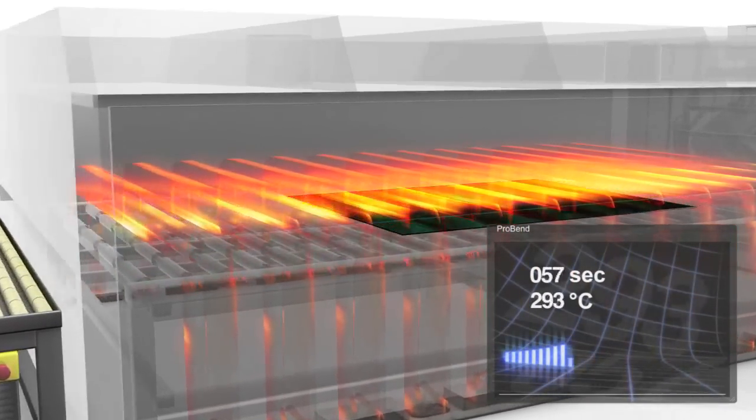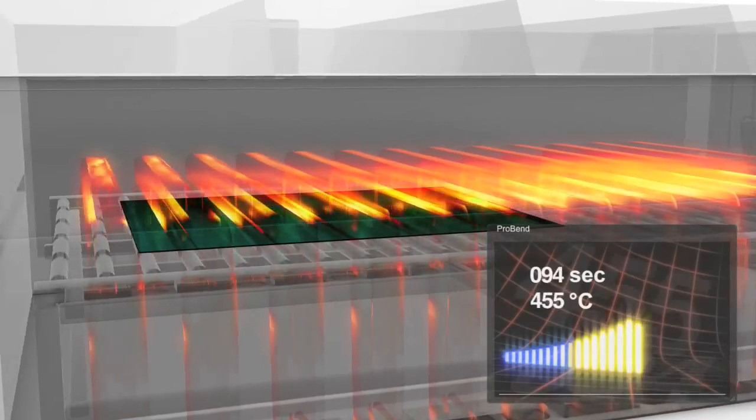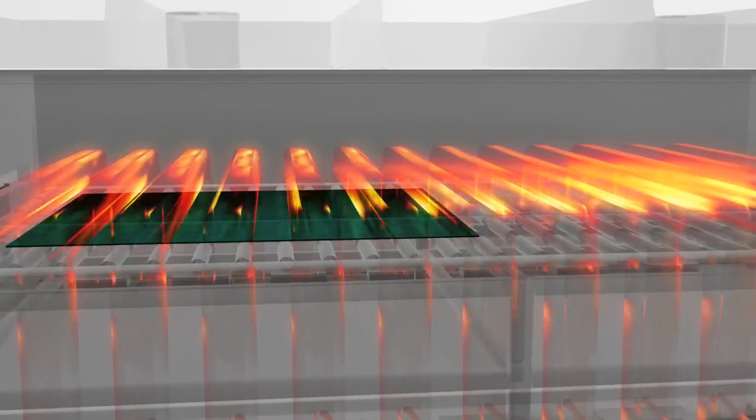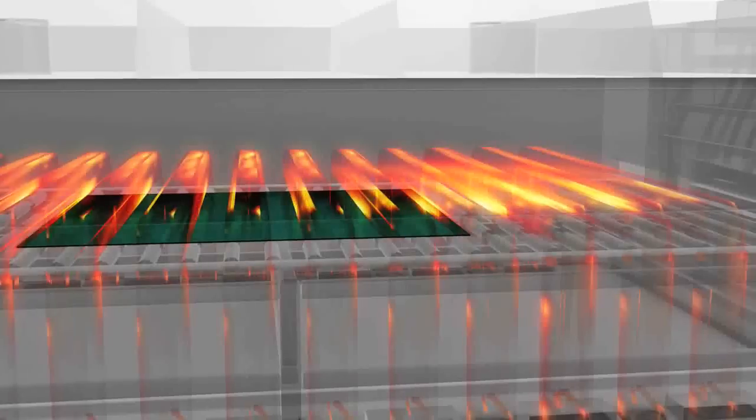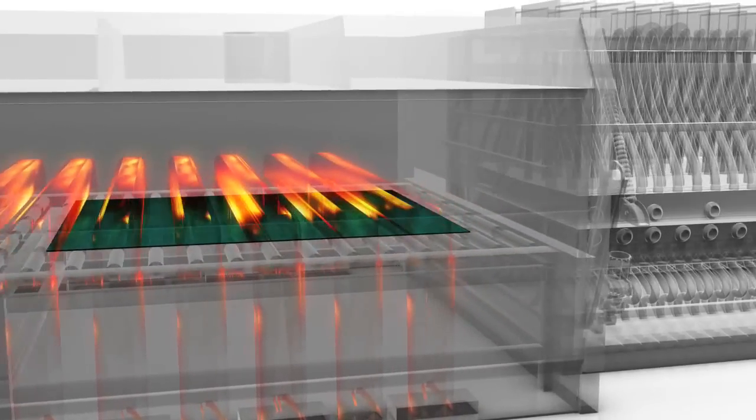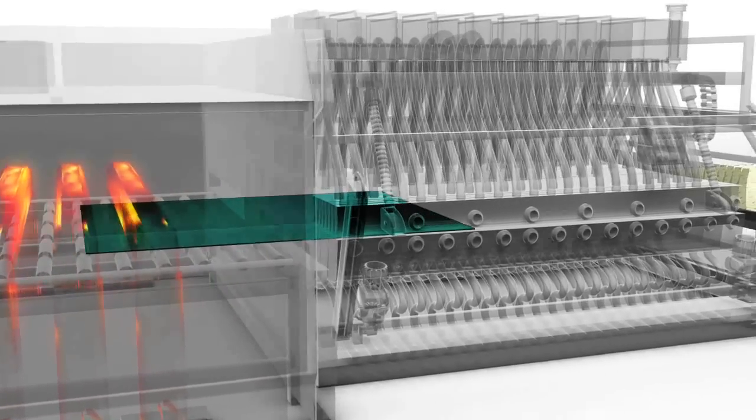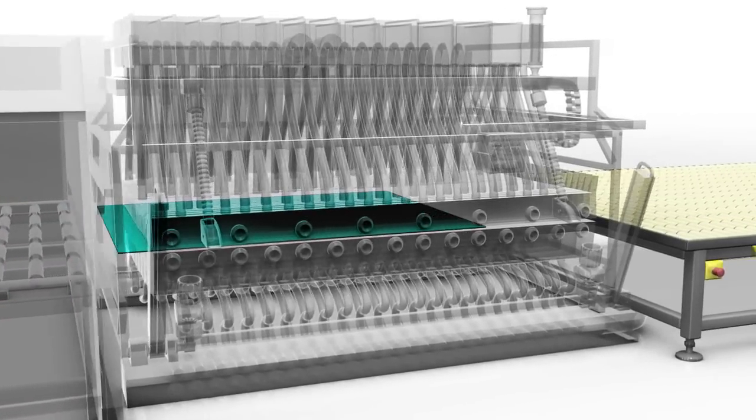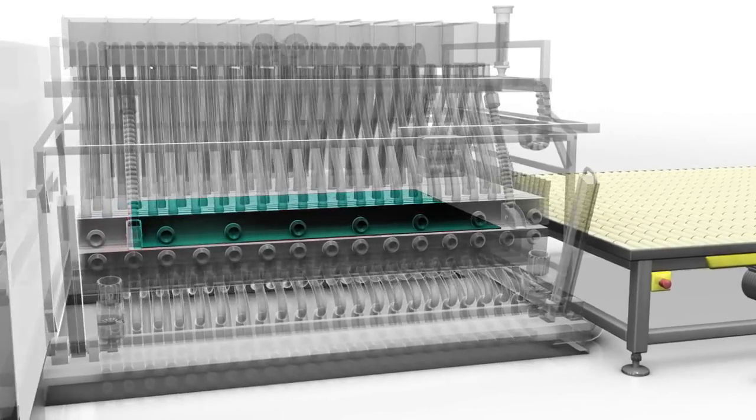In the first step, the sheet is heated up in a special TamGlass furnace. After about five minutes of heating, it is passed to the bending unit where it is bent to achieve the required shape.